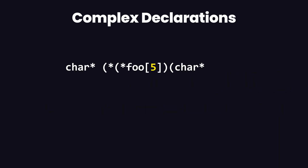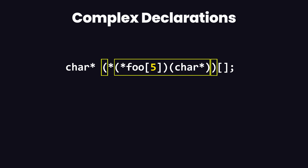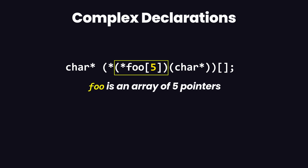Now let's talk about a very complex declaration. Let's try to solve this step by step. We have an outer parenthesis and two inner parentheses, so we are going to go inside the innermost parenthesis and solve the left one first. Inside this parenthesis we have 'foo', which is an array of five, and then we have the prefix asterisk.